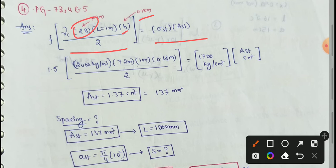We have two lanes — 2B. The distance is 7.2 m. Next, we have length of 1 m considered. Next, we have gamma c — gamma c means unit weight of concrete — 2400 kN per m³.